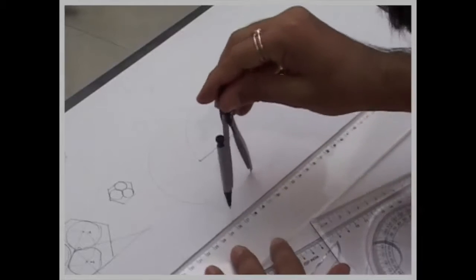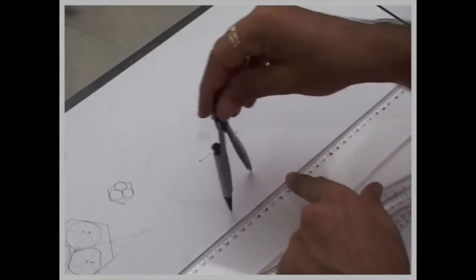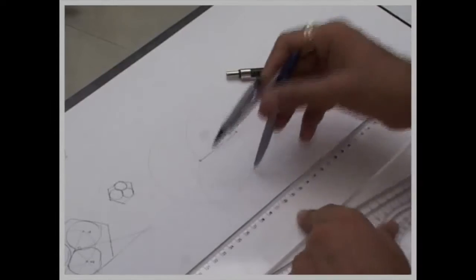From here, wherever they intersect, from there, again, maintaining the same radius, we draw another line.